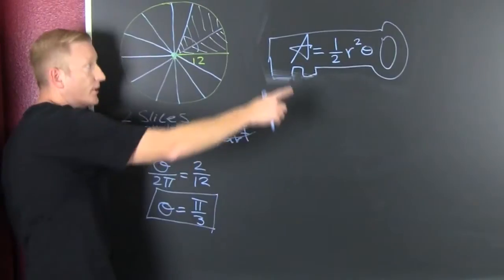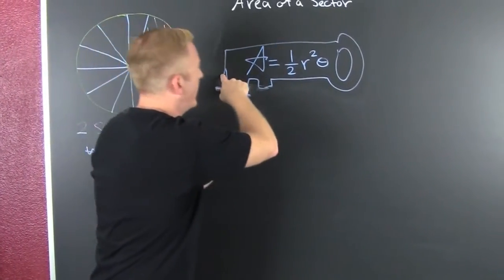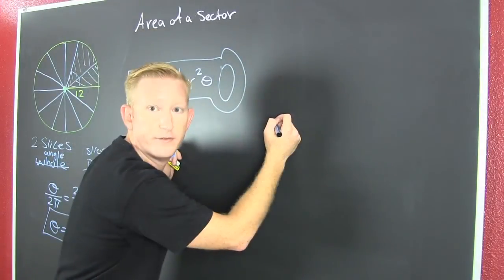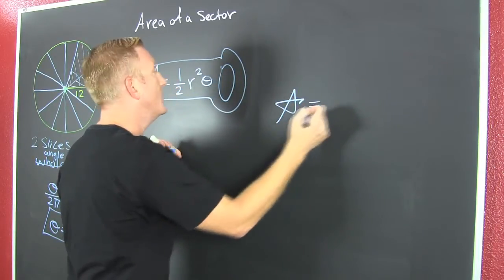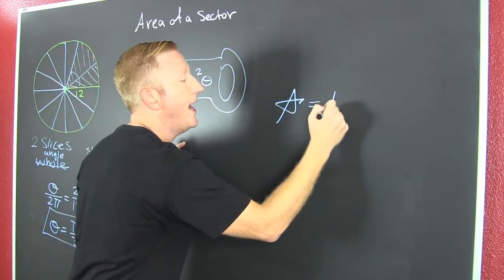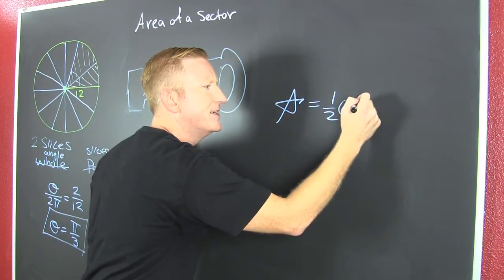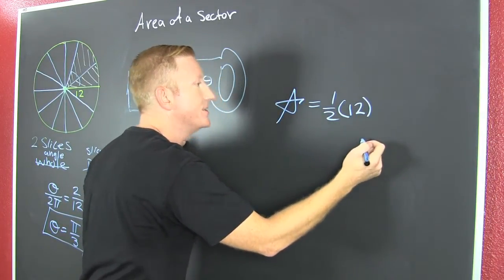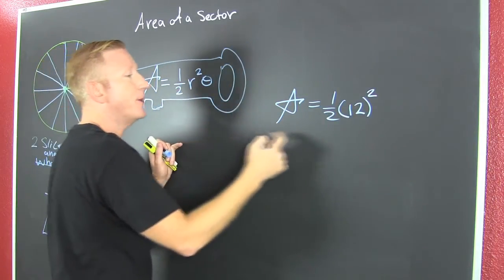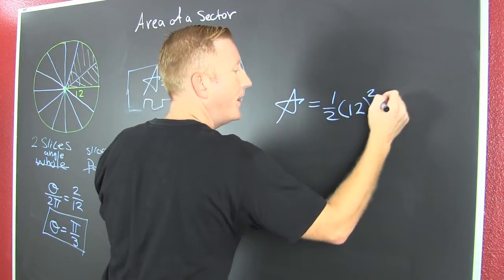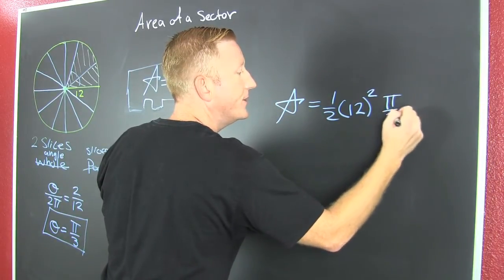Now what are we going to do with that? We're going to put it in here. Well, over here. I have my fancy area. This is going to be 1 half. Our pizza is 12 inches. And then we're going to square that dang thing. And we're going to multiply it by our theta, which we found to be pi over 3.